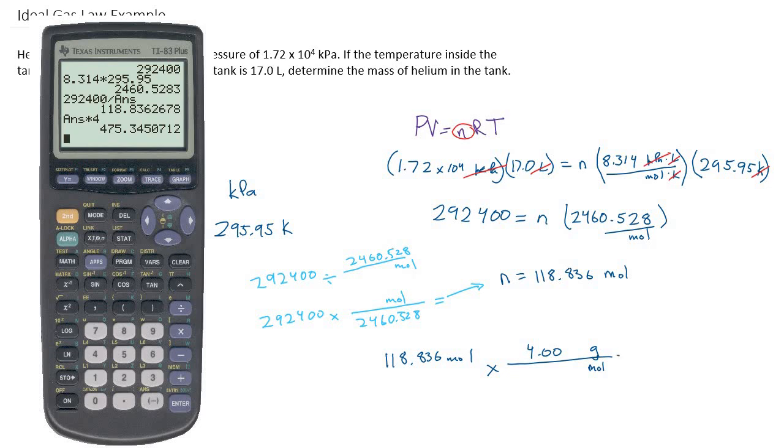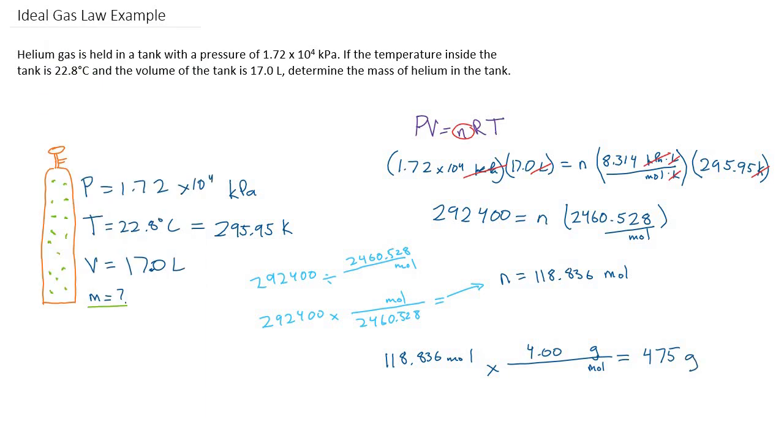Since we are at our final answer and we know we're going to have to report in three significant digits, I'm going to round to 475 grams of helium that should be in our tank.